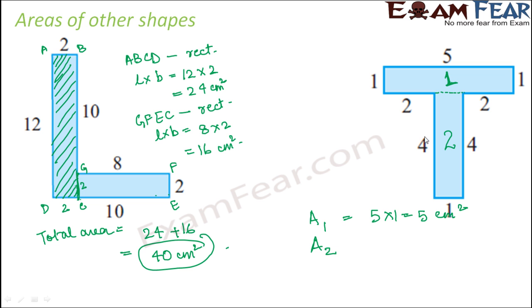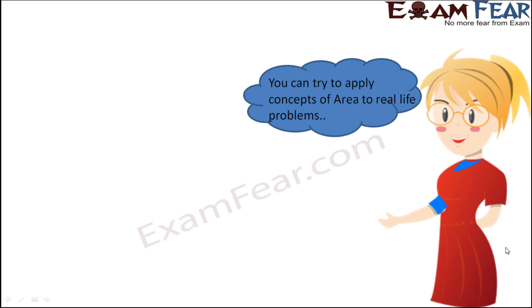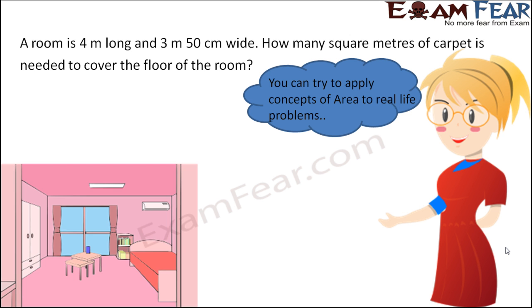What would be the area of rectangle 2? Here length is 4 and breadth is 1. So this would be 4 centimeter square. Therefore, the total area would be equal to A1 plus A2, that is equal to 5 plus 4 which is equal to 9 centimeter square. So let us now try to apply these concepts of area to real life problems.